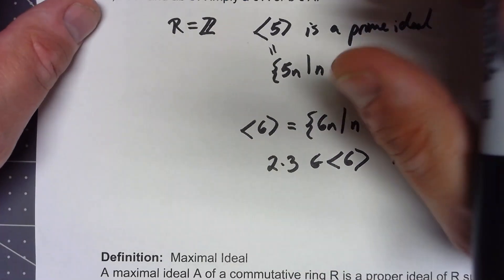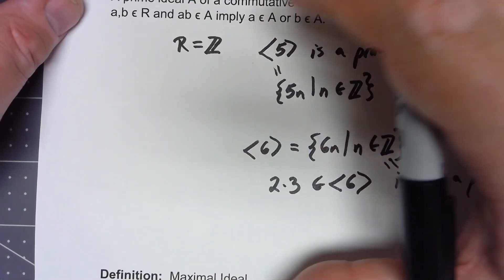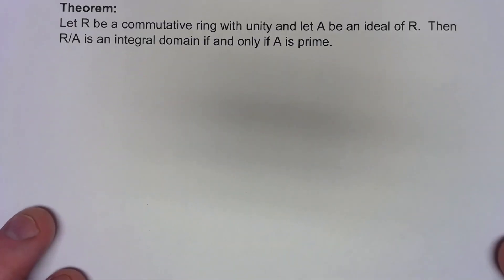Both of these ideas, the prime ideal and the maximal ideal, can be tough to verify in general. But there are some interesting properties involving them.